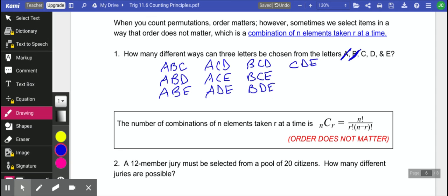In combination, order does not matter. And the formula is N factorial over R factorial times N minus R factorial. So if we were to do this last problem using that formula, we had five letters and we were choosing three of them. So we would have five factorial over three factorial, and then N minus R factorial would be five minus three factorial.